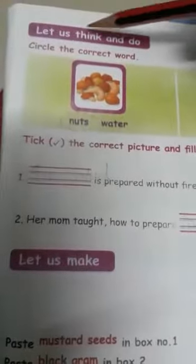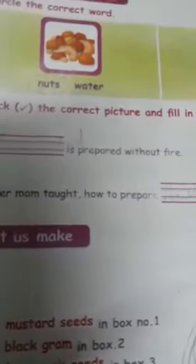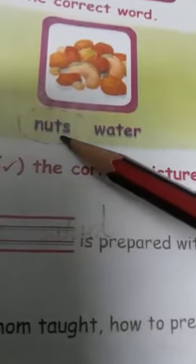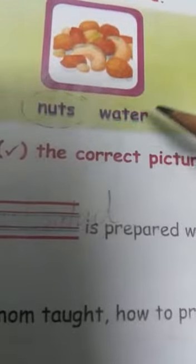Let us think and do. Circle the correct word. First one. See the image. Nuts. Water. Which one is correct? Nuts. Circle.